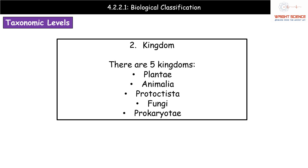Once we move away from the domain model, we come to the seven different classification levels that came from the time of Linnaeus. The first of these is the kingdom. There are five kingdoms that all organisms on Earth are split into: Plantae, Animalia, Protoctista, Fungi, and Prokaryotae. These five kingdoms are still quite diverse but each has some unique features that we need to know about.